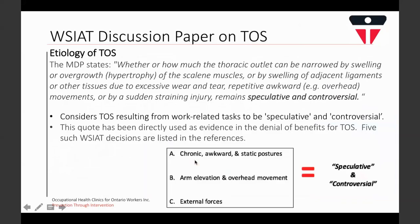The paper makes a damaging statement toward work-related and functional causes of TOS by calling etiology in this manner both speculative and controversial. Specifically, the paper states whether or how much the thoracic outlet can be narrowed by swelling or overgrowth of the scalene muscles, repetitive awkward or overhead movements, or by a sudden straining injury remains speculative and controversial. This statement has been directly used as evidence in the denial of benefits for TOS claims, and five such decisions are listed in the references.